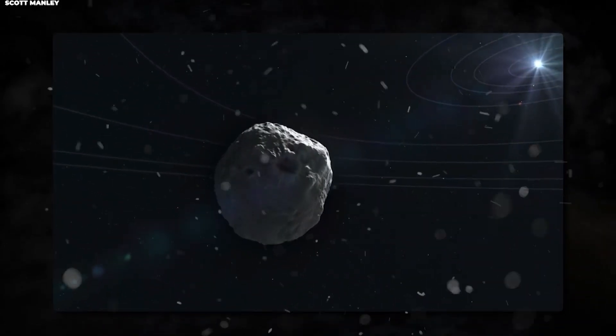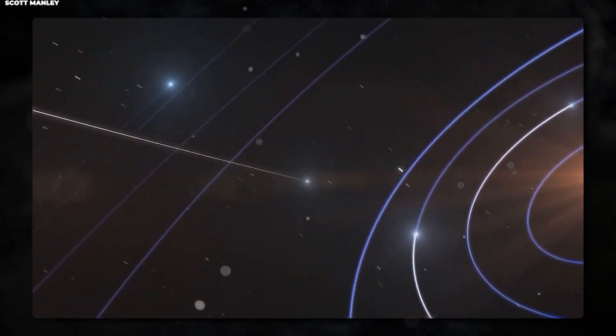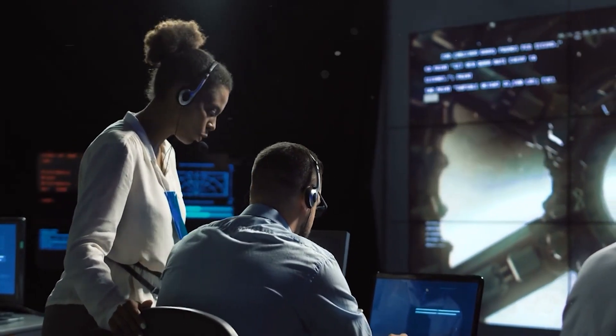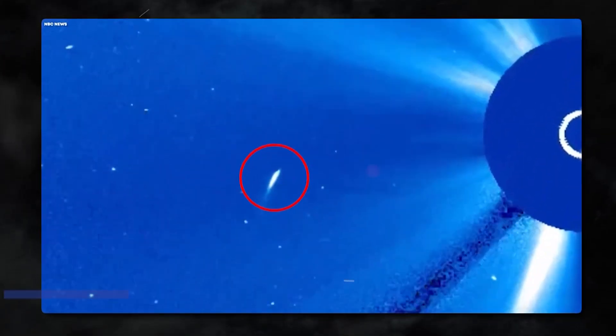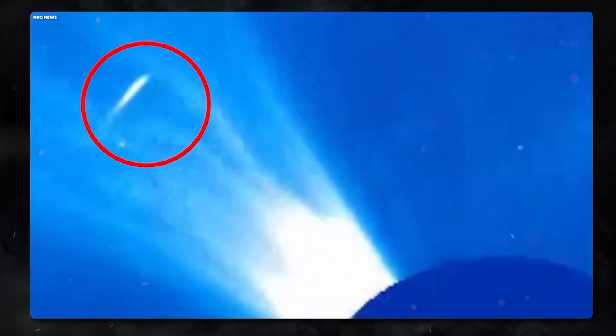What if I told you that right now, as you're watching this video, there are objects from alien star systems passing through our solar system? And what if I told you that NASA caught one of them doing something absolutely bizarre? No, this isn't about UFOs or little green men. This is about something real that happened in 2019, and honestly, the truth is way cooler than any science fiction.